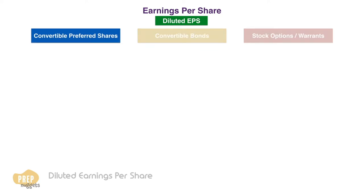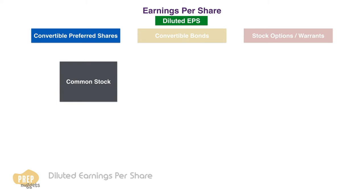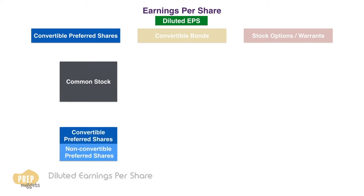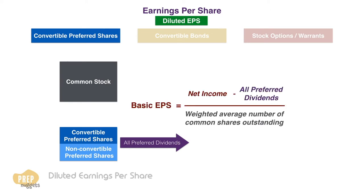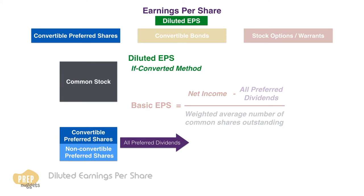Let's start with convertible preferred stock. In this illustration we have a company that has common stocks and some preferred shares. Some of the preferred shares are convertible. Preferred dividends are to be set aside for the preferred shareholders. The basic EPS is the net income minus all the preferred dividends paid out, divided by the number of common shares. Diluted EPS is calculated using the if-converted method.